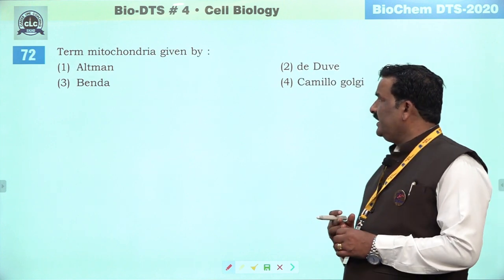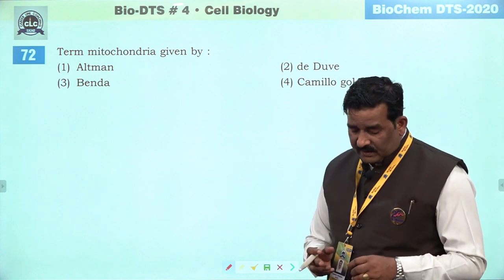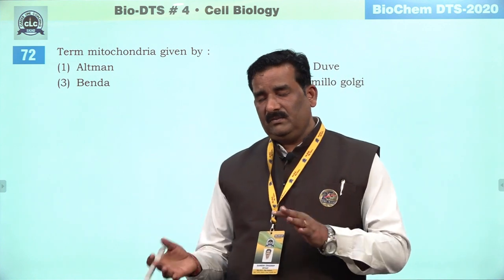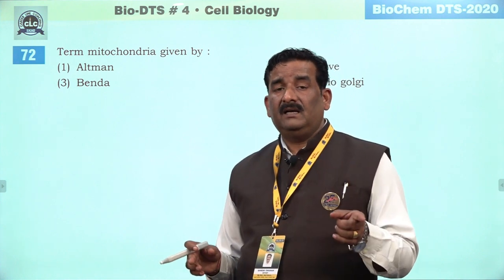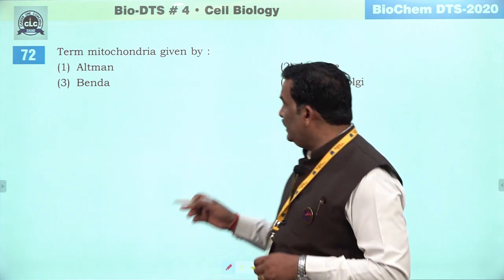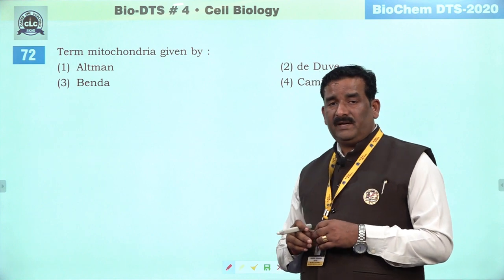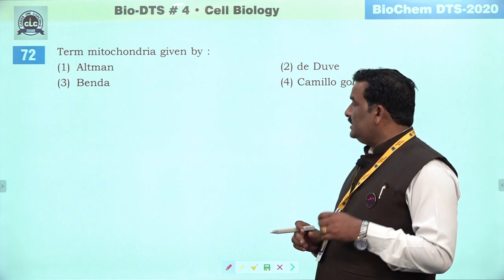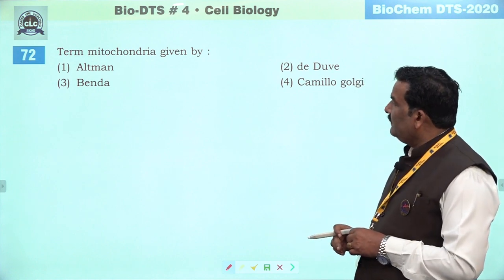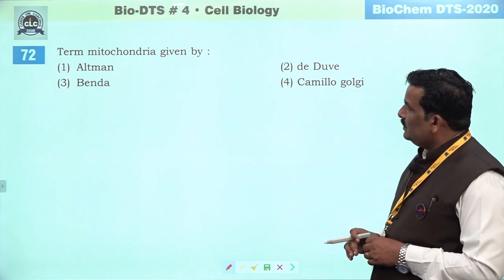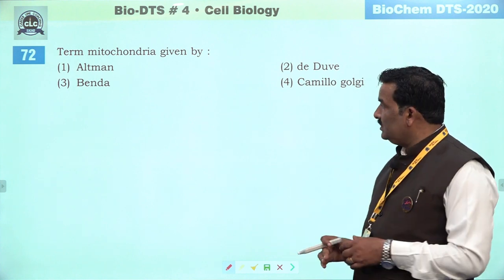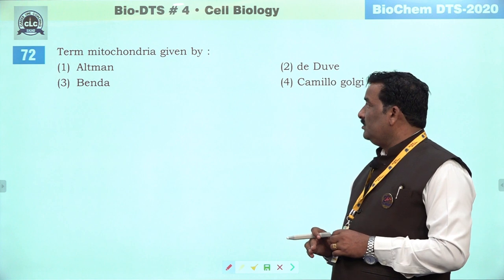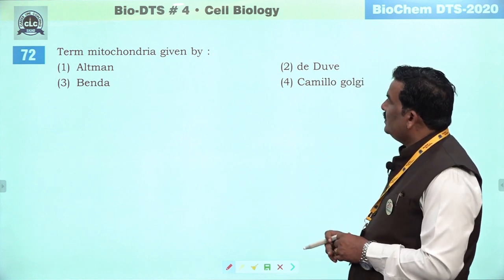Next question: term mitochondria — mitochondria ka matlab hota hai thread, mitochondria ka matlab hai granule. Aur inhi dono se milkar mitochondria bana. Yeh term dene waala scientist tha C. Benda — C. Benda ne yeh term diya tha 1898 mein. Beyond the NCRT questions aa rahe hain — toh yeh ek Benda se better question ban sakta hai mitochondria ke liye.